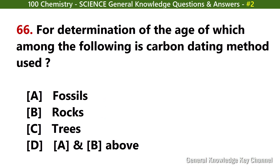For determination of age, which among the following is the carbon dating method used? Answer D: A and B above — fossils and rocks.